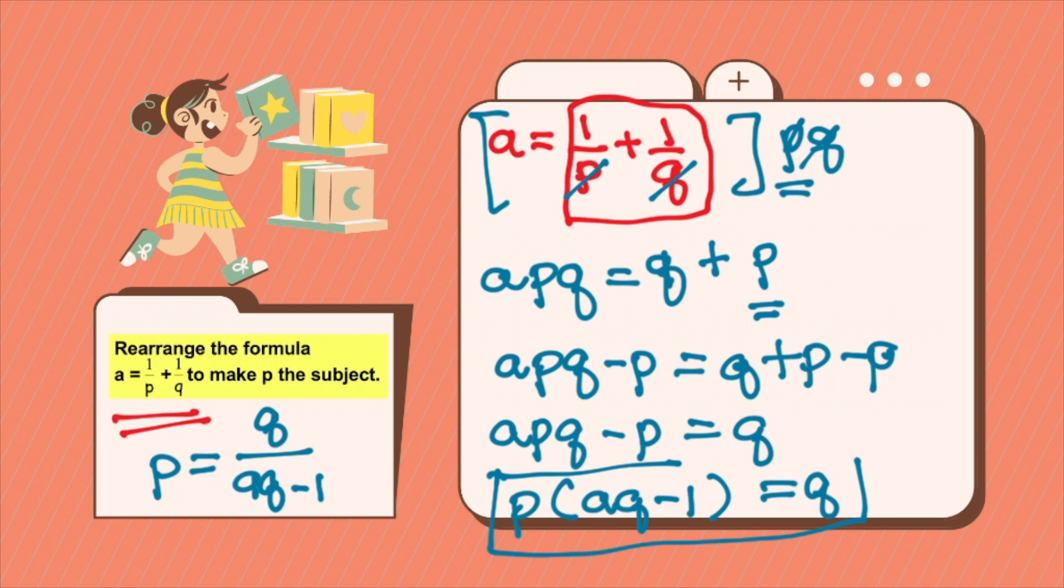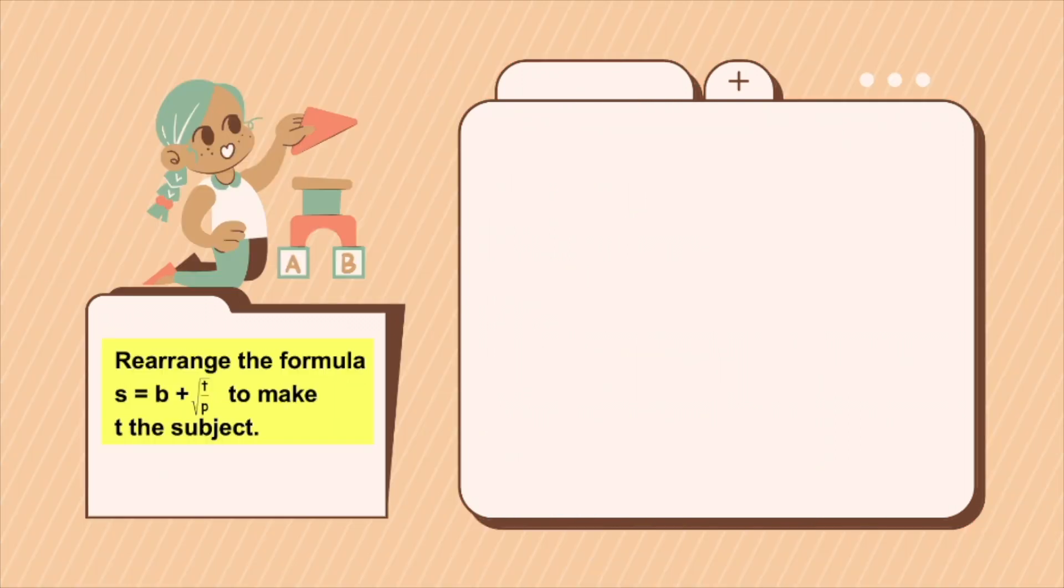Let's try another example. If you are asked to rearrange a formula where you have a square root, now the same thing, a square root, when you transfer, it becomes a square. So if you want to rearrange this to make t the subject, first is, since you have s equals b plus the square root of t over p, we have to subtract b from both sides. So you will have s minus b equals b minus b plus the square root of t over p.